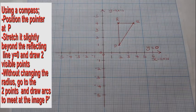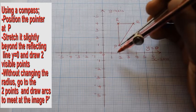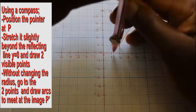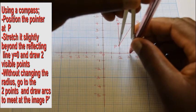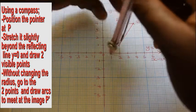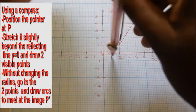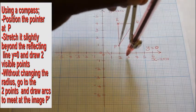Position the compass at the object point P, stretch the radius of the compass, and cut the mirror line on two different points with visible crosses.